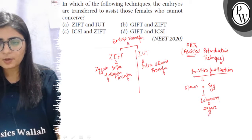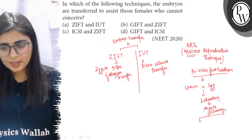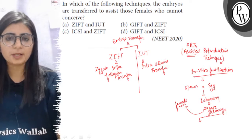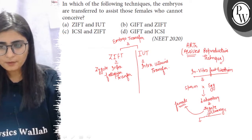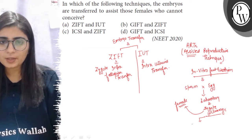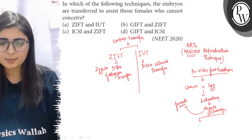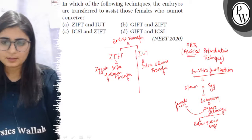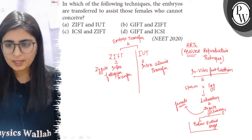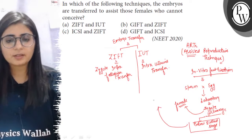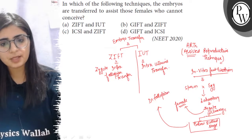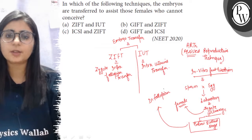The zygote then undergoes cleavage and is transferred to the female, who can be the genetic mother or a surrogate mother. If the embryo is below the 8-cell blastomere stage, it is transferred into the fallopian tube of the female — whether genetic mother or surrogate.